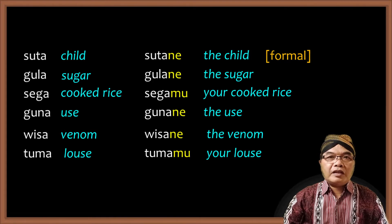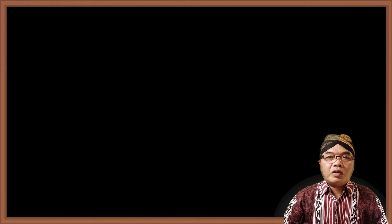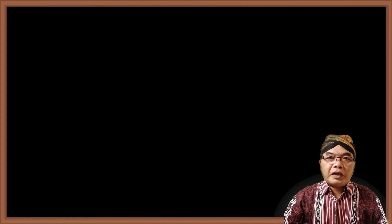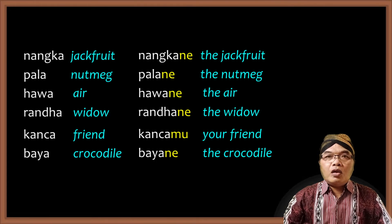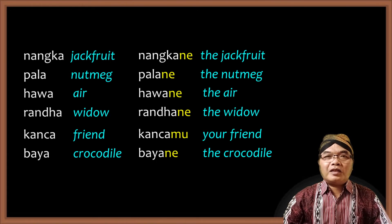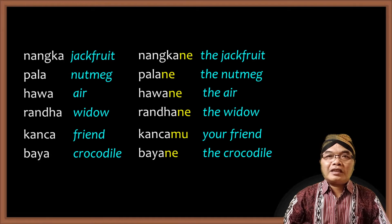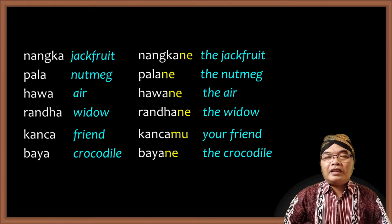Apart from changing the final O into A, these endings also change the penultimate O into A. For example: NONGKO becomes NANGKANE, POLO becomes PALANE, WOWOHO becomes HAWANE, RONDO becomes RANDANE, KONCO becomes KANCAMU, BOYO becomes BAYANE.